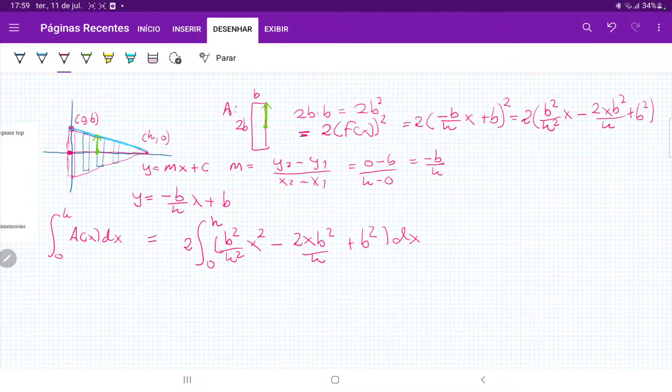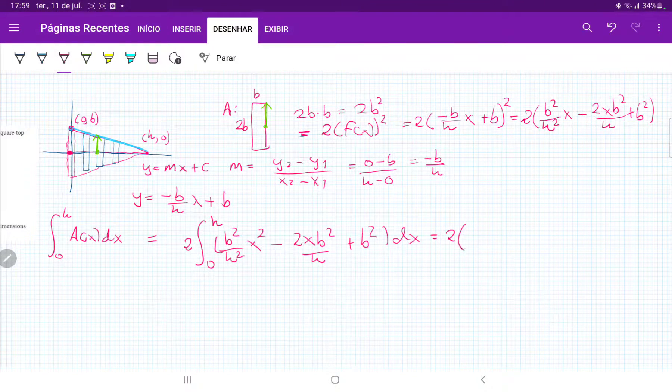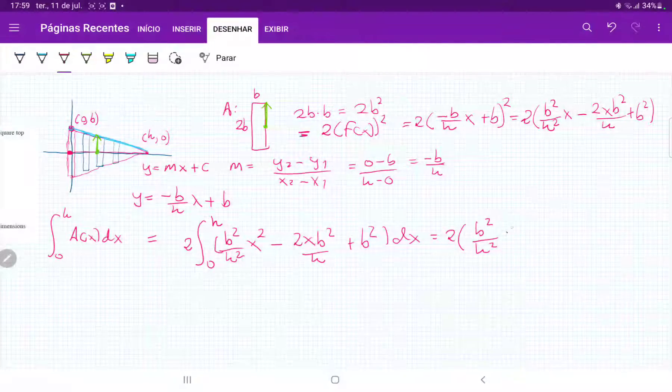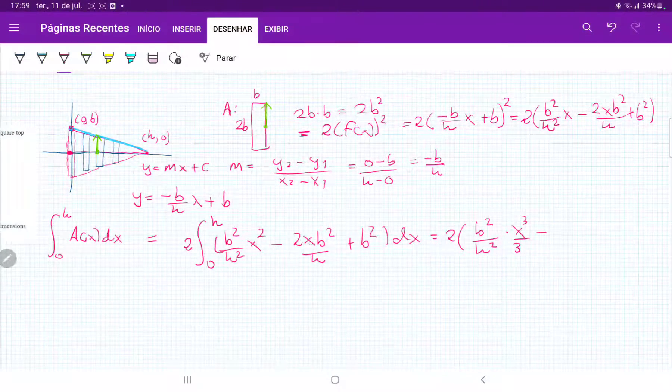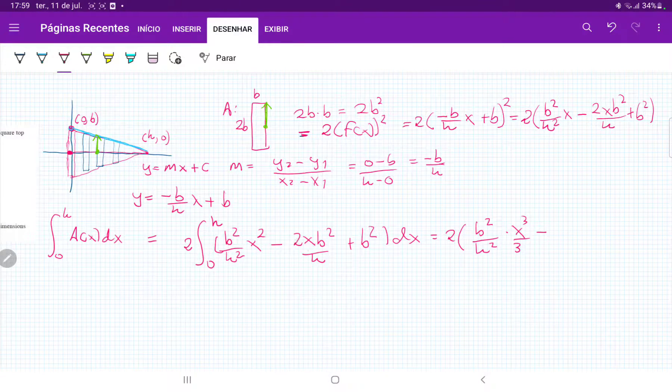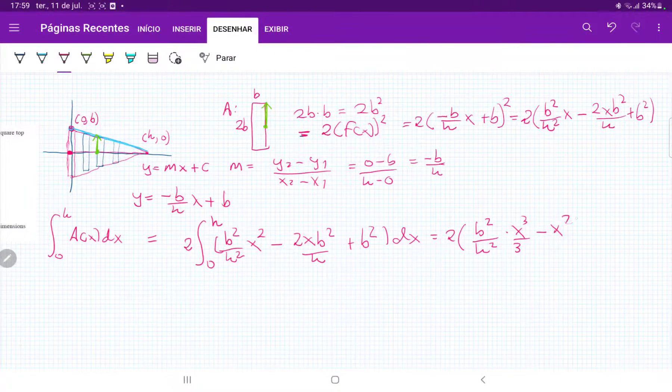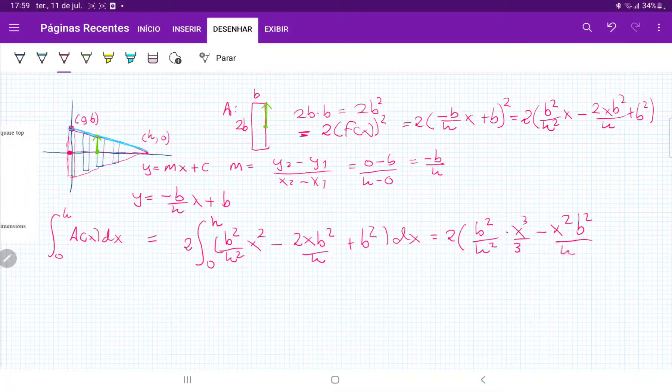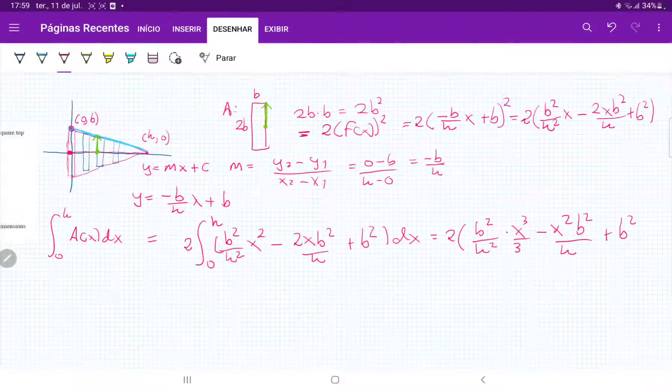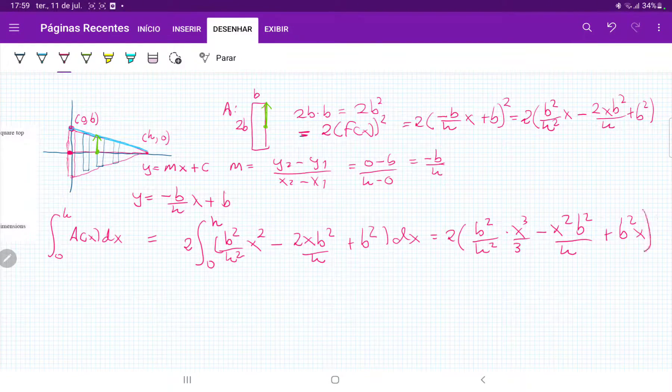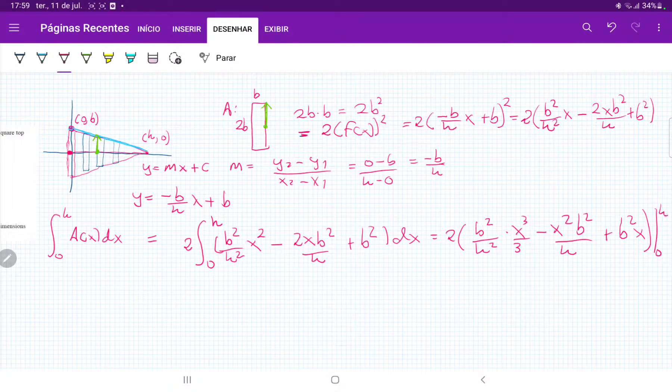So once we have this, it's 2 times b squared over h squared times x cubed over 3, and then minus x squared divided by 2 is going to cancel out with that 2, so we're just going to have x squared b squared over h, and then plus b squared times x, and all of this evaluated from 0 to h.